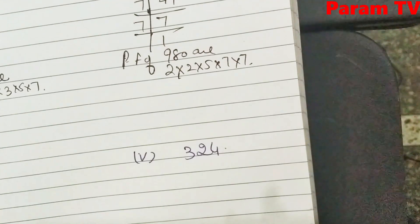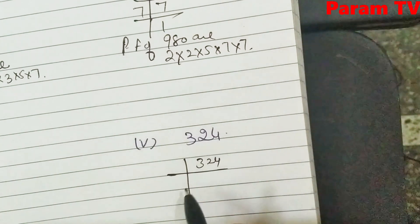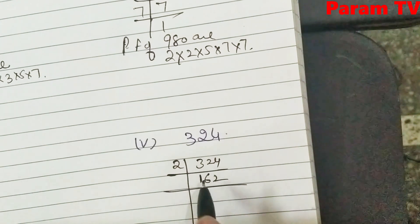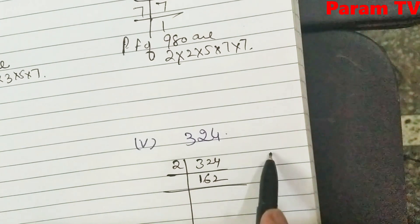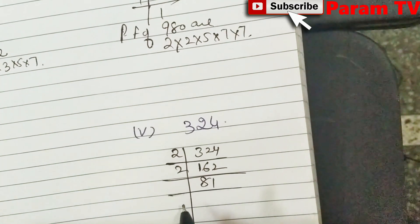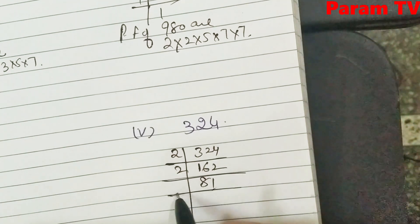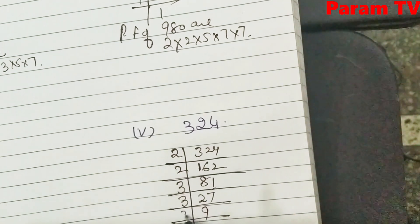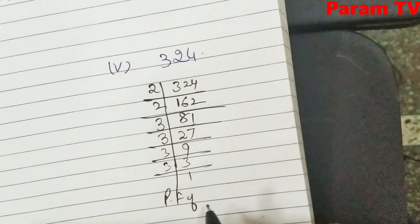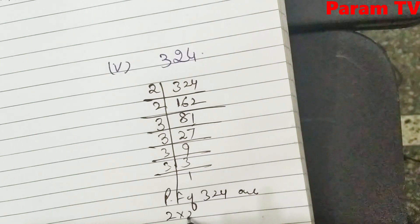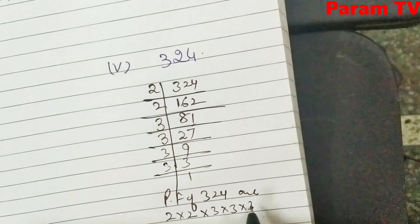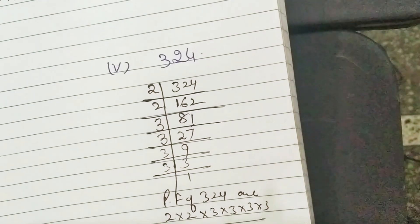Let's do one more — this is 324. Divide by 2: 2 ones are 2, 2 sixes are 12, 2 twos are 4 — giving 162. Again divide by 2: 2 eights are 16, 2 ones are 2 — giving 81. Can't divide by 2 since last digit is 1. So try 3: 3 nines are 27, 3 threes are 9, 3 ones are 3 — giving 27. Again 3 gives 9, again 3 gives 3. So the prime factors of 324 are 2 × 2 × 3 × 3 × 3 × 3.